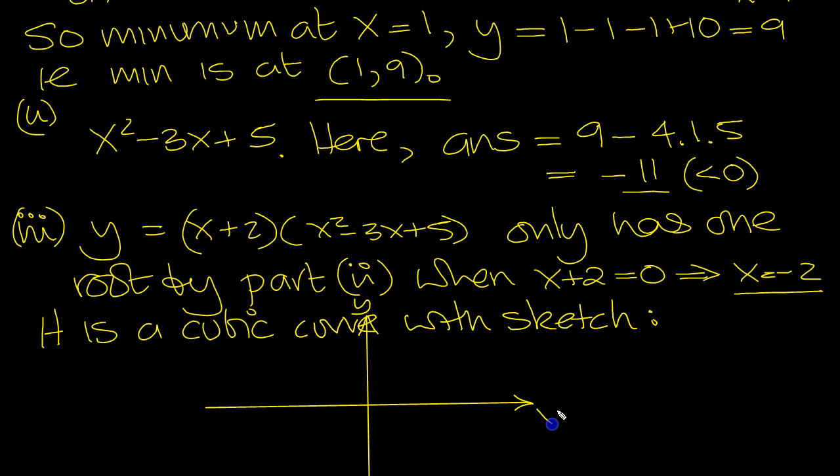Let's put it here with a digital pen. Put it here. I know it's over that, but it is. Just a quick sketch. It's got a minimum at 1, 9. Here's the minimum. So it's going to come down. It's only got one root at minus 2. So it's going to come here.